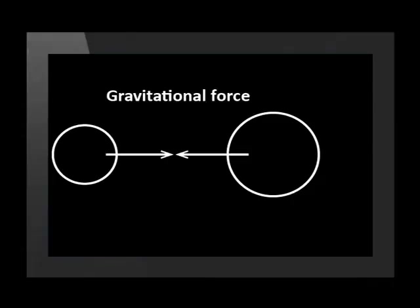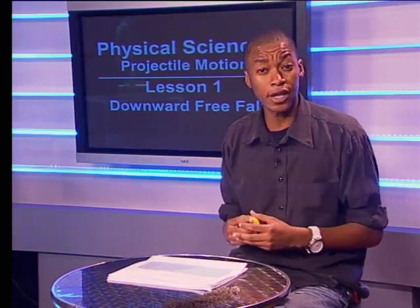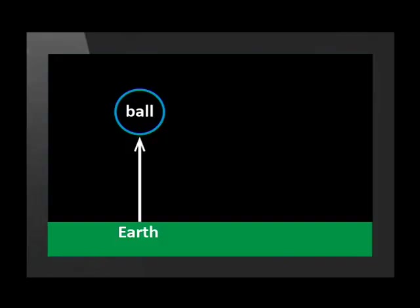It is the gravitational force, or to be more specific, the object's weight. Any two objects attract one another by gravitational force because they have mass. The ball and the earth are two objects with mass, so they attract one another by gravitational force.